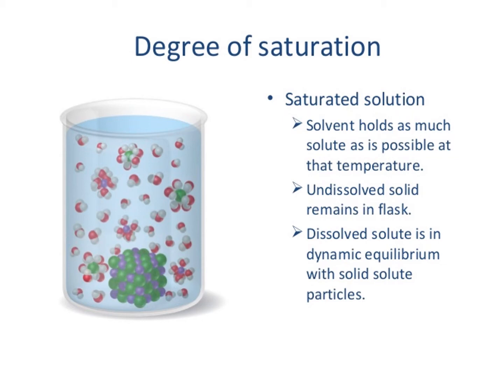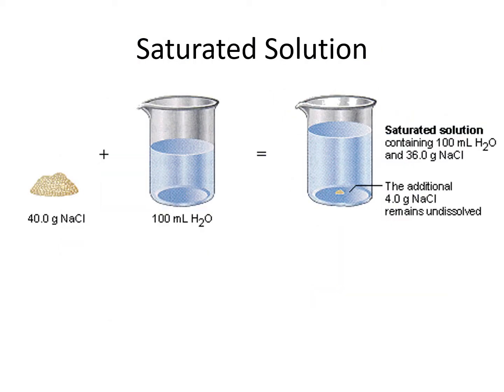The first degree of saturation is a saturated solution. In a saturated solution, the solvent holds as much solute as is possible at that temperature, and dissolved solid remains in the flask. The dissolved solute is in dynamic equilibrium with solid solute particles. For example, when 40 grams of sodium chloride is added to 100 mL of water and mixed, if there is remaining residue or particles at the bottom, this solution is saturated.